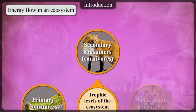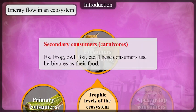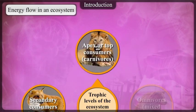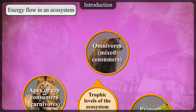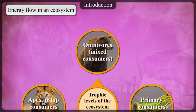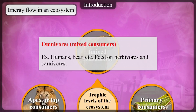Secondary consumers are carnivores — e.g. frog, owl, fox, etc. These consumers use herbivores as their food. No other animals feed on top consumers. Omnivores, i.e. mixed consumers — e.g. humans, bear, etc. — feed on herbivores and carnivores.